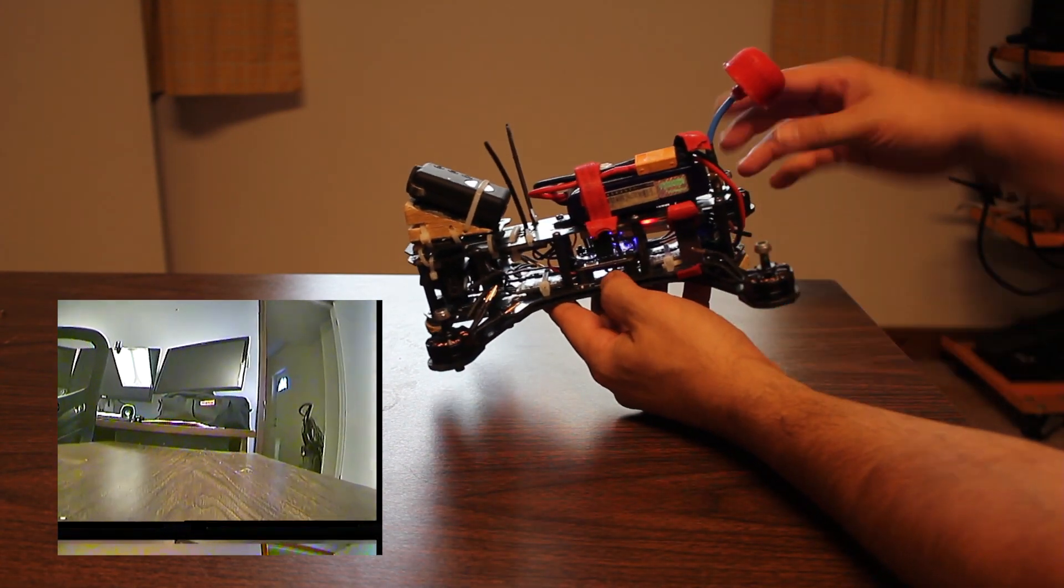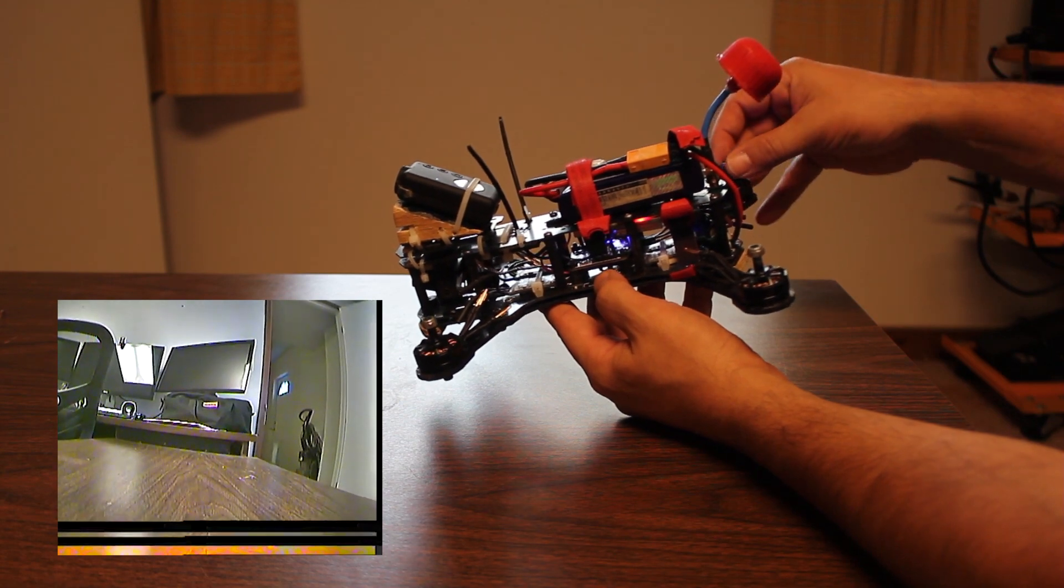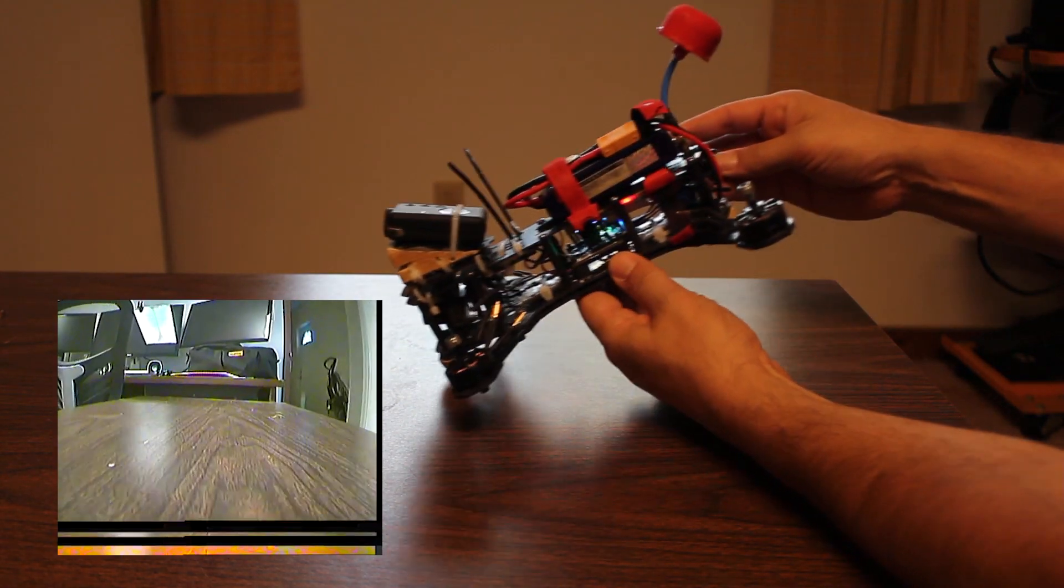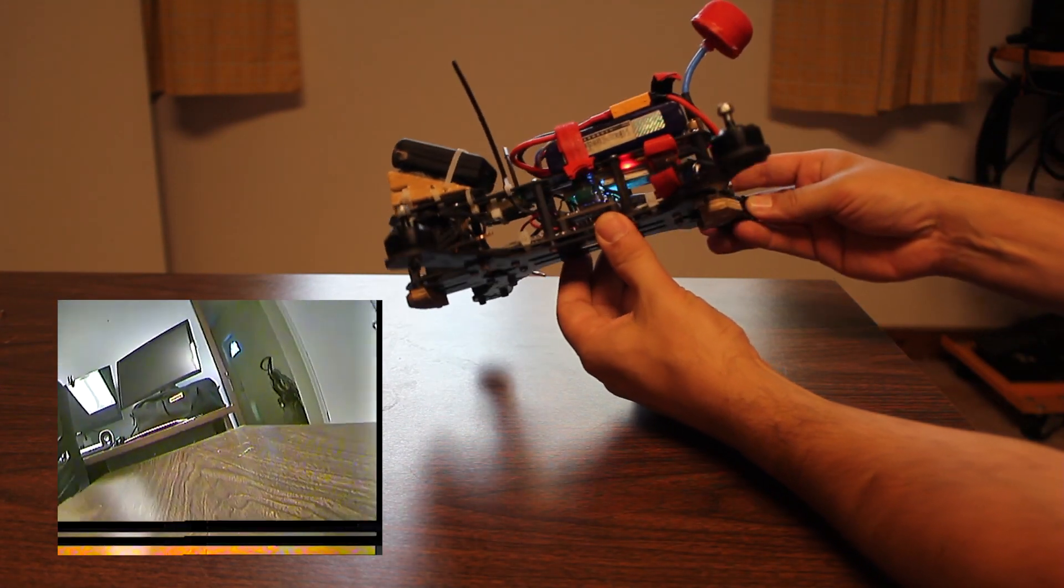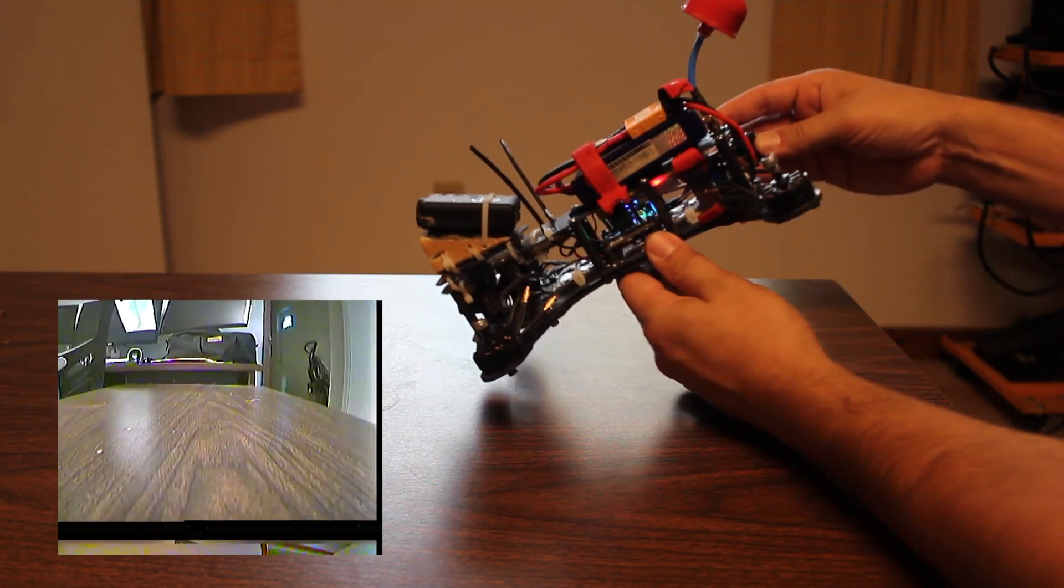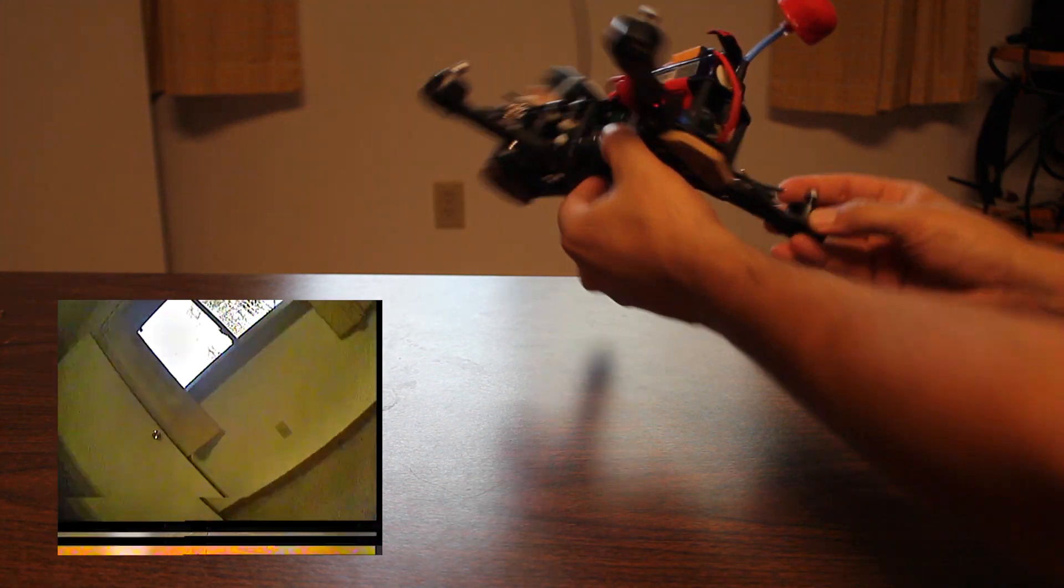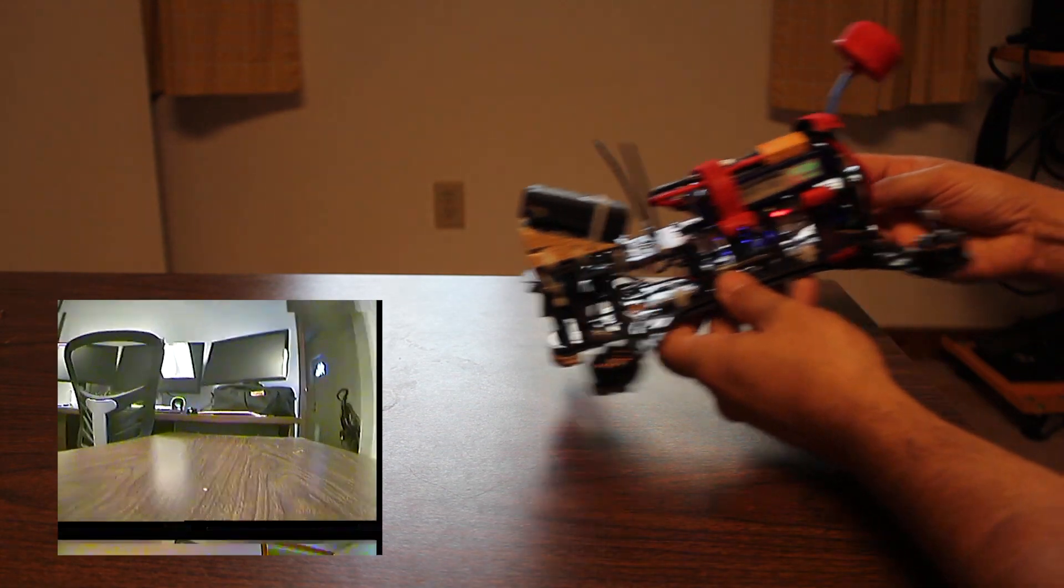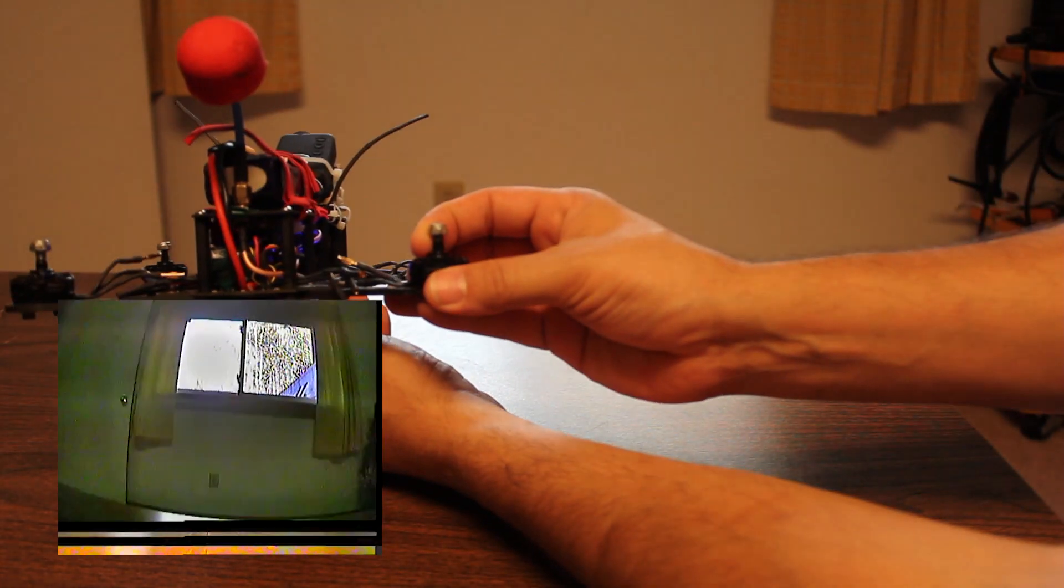Then you can start mixing in different amounts of roll. The most common thing you're going to do is if you're flying straight forward and you go to roll, you're going to want the copter to actually roll into the turn so that you get a nice smooth coordinated turn.